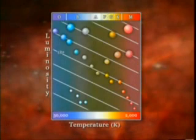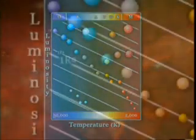Lines of constant radius can be overlaid to complete the HR diagram. These lines provide a quick reference of the diameters of the stars that plot along them.